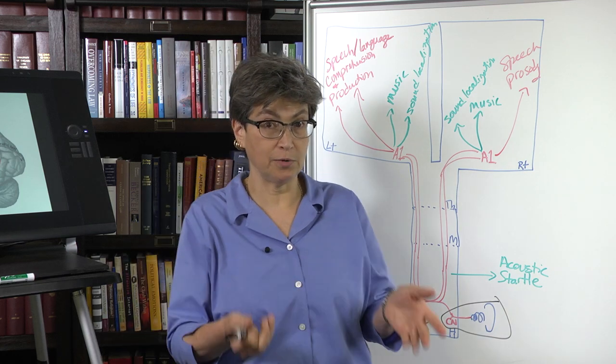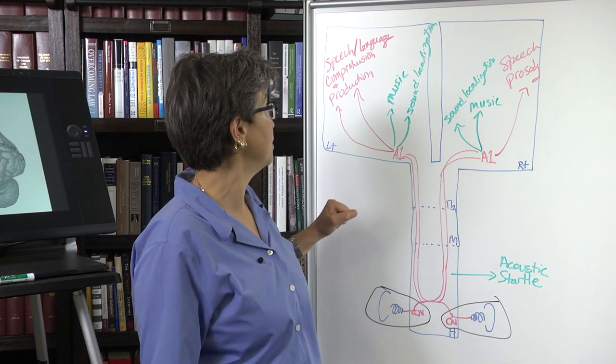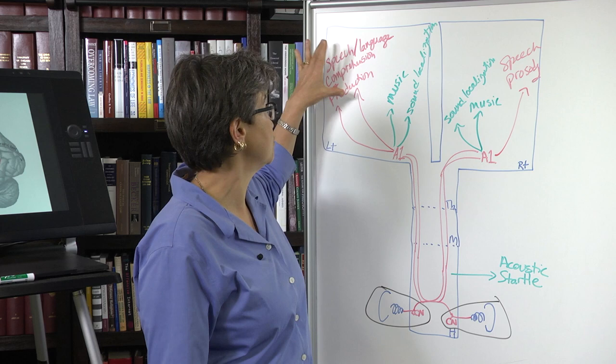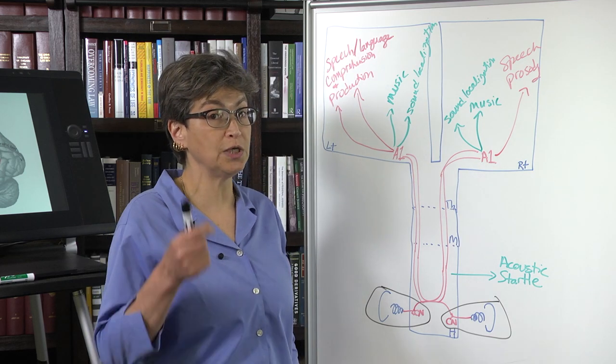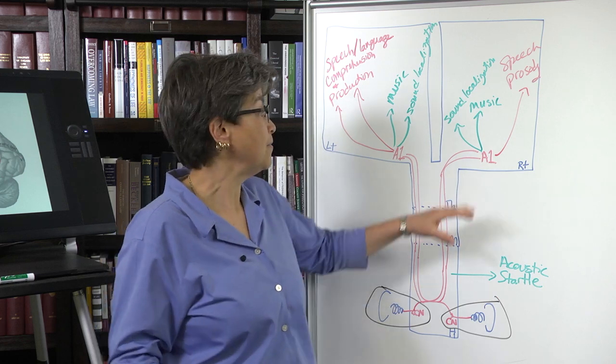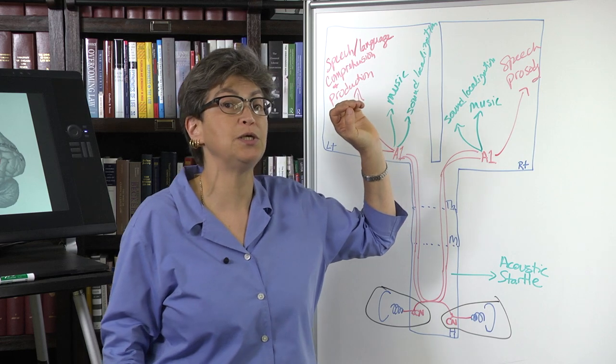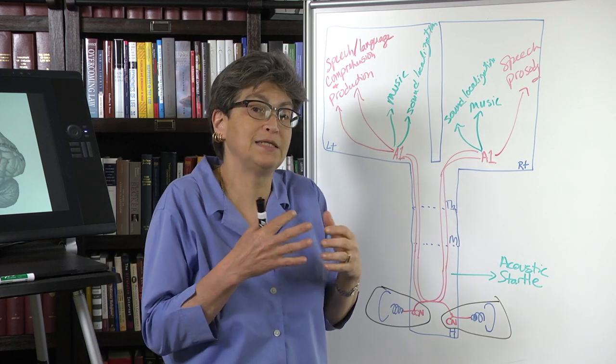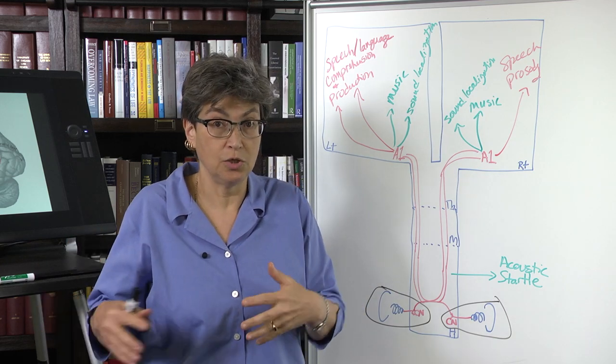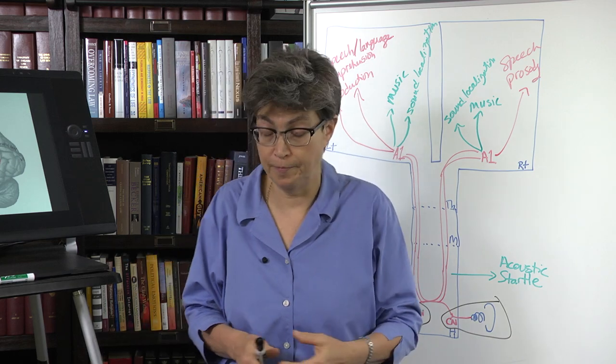What dominant means is which hemisphere is responsible for language comprehension and production. So it is the left hemisphere, and I'm going to speak as though it's always the left hemisphere. In a few people, it's the right hemisphere. So the dominant hemisphere, the left hemisphere, is responsible for producing and comprehending language. The right hemisphere has roles in speech, but less in the semantic content and more in prosody, so the underlying tone.